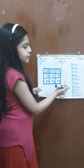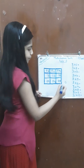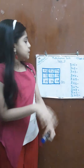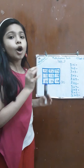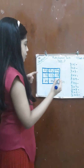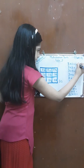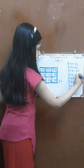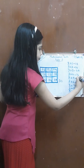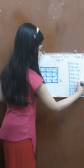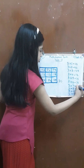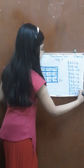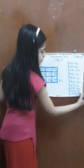Now besides the 0 we are going to write number 3. There we go — we got the table of 3! Now let's put all these numbers in order: 3, 6, 9, 12, 15, 18, 21, 24, 27, and 30.